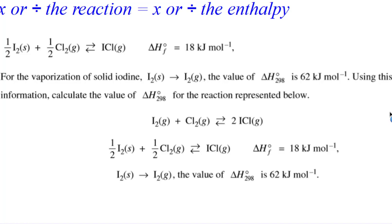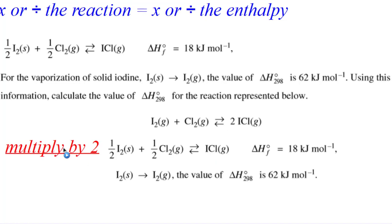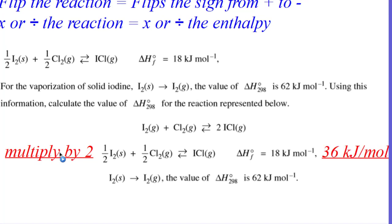So we take the first reaction. And what do we have to do for that first reaction to make it look like that target reaction? We have to double it. We've got to multiply everything by two, which multiplies the iodine by two, the chlorine by two, and the ICL by two. Which means we've got to also multiply the delta H by two to become 36 kilojoules per mole.